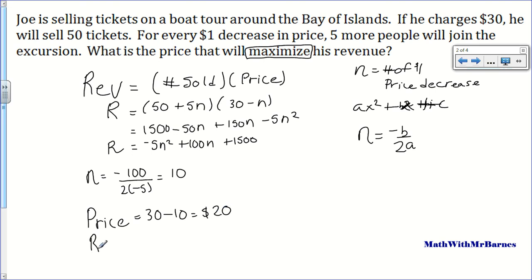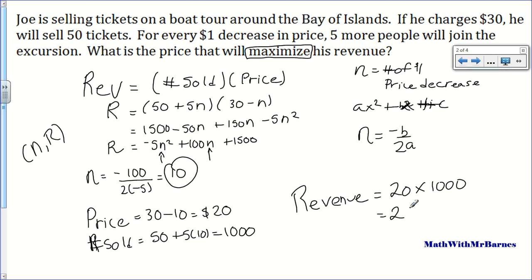If I want to find the revenue, or sorry, the number sold. The number sold would be 50 plus 5 times 10. So he's going to sell 100 tickets now. And then his revenue, if I wanted to find it, I have two options. I have two options. I can take this 10 and go back in here, sub in here, and that gives you a revenue. Really, my vertex for this situation is the number of price increases and the revenue. But again, I don't have to do that. I can just go 20 times 100. And that's going to give me 2000. So that's how much money he's going to make. So I should be in the boat tour business, not the math making video business. Alright guys. So that's a good example of a question like this.